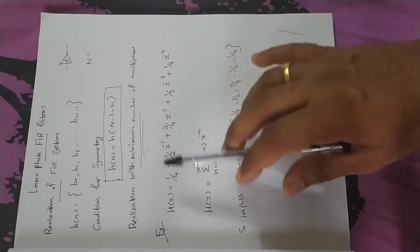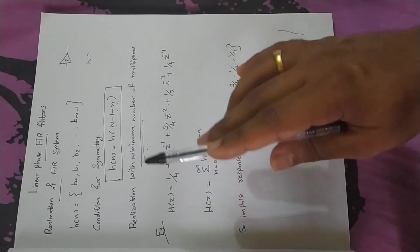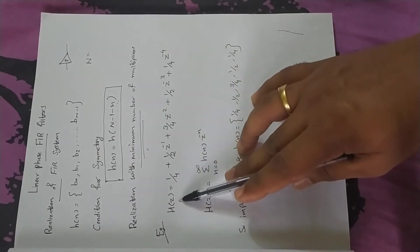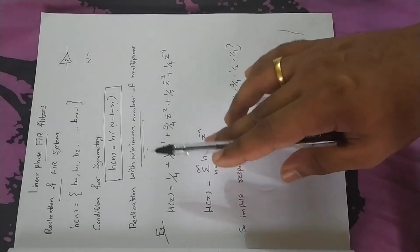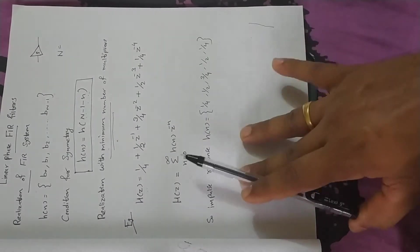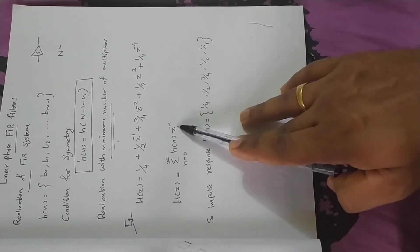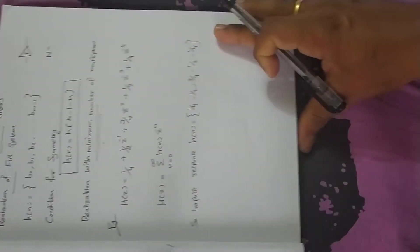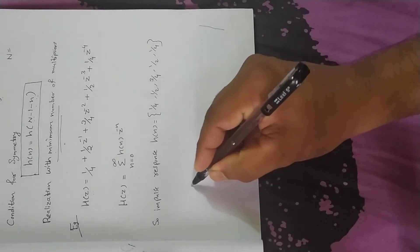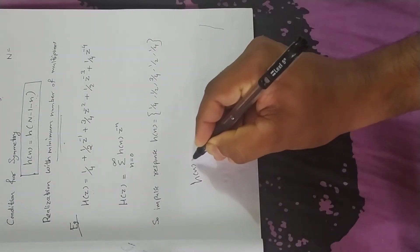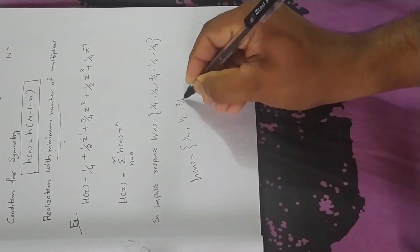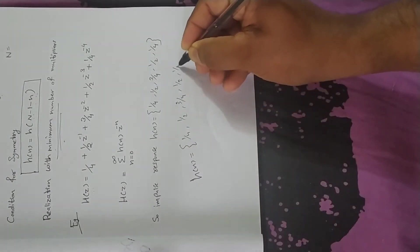Let's look at the problem directly. H(z) has coefficients: 1/4, 1/2, 3/4, 1/2, 1/4. These are the coefficient values for h(n): 1/4, 1/2, 3/4, 1/2, 1/4. This is the same.